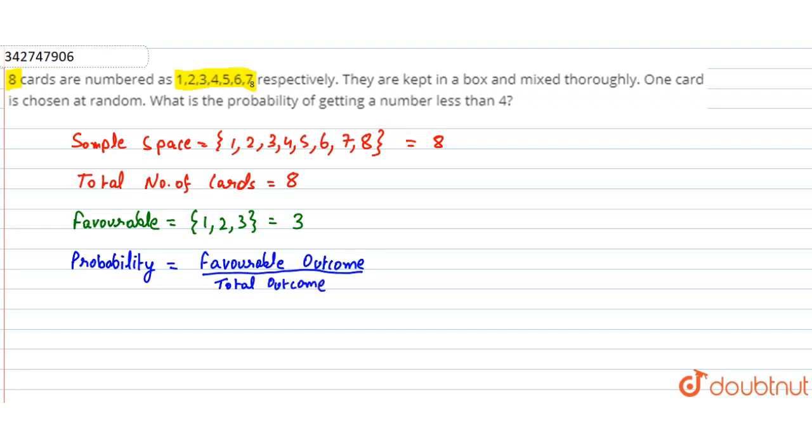Now we can add our values. Our favorable outcome is 3, divided by total outcome is 8. So this is our answer, so we can write it.